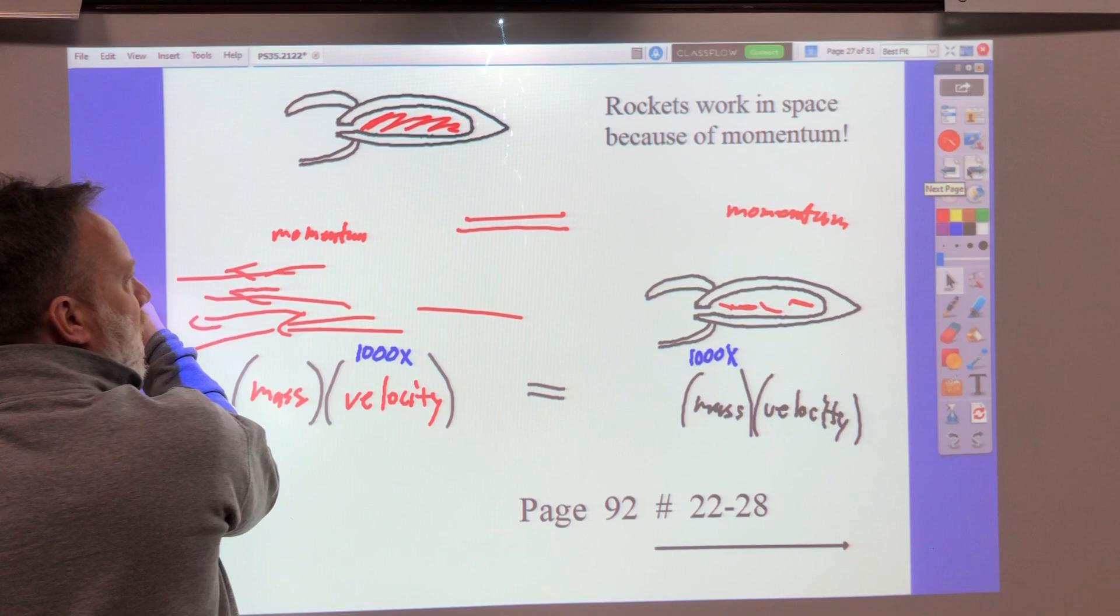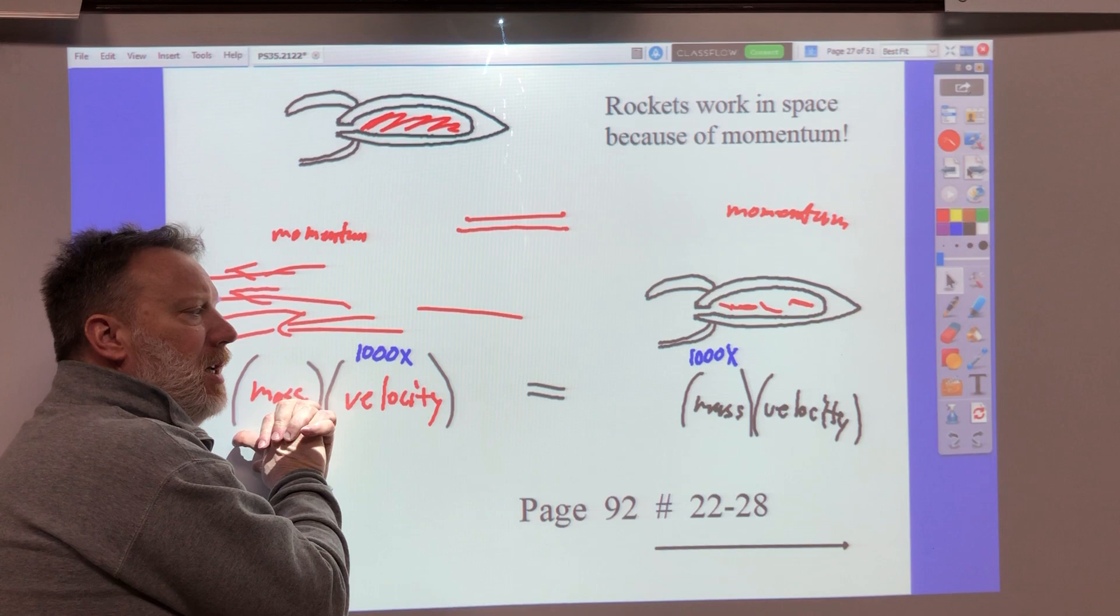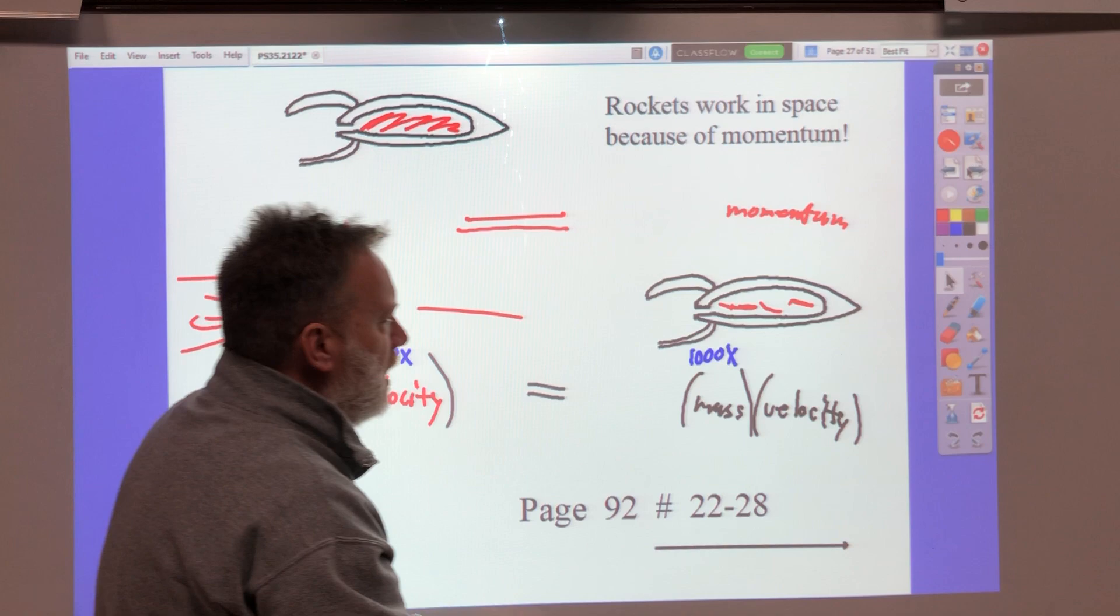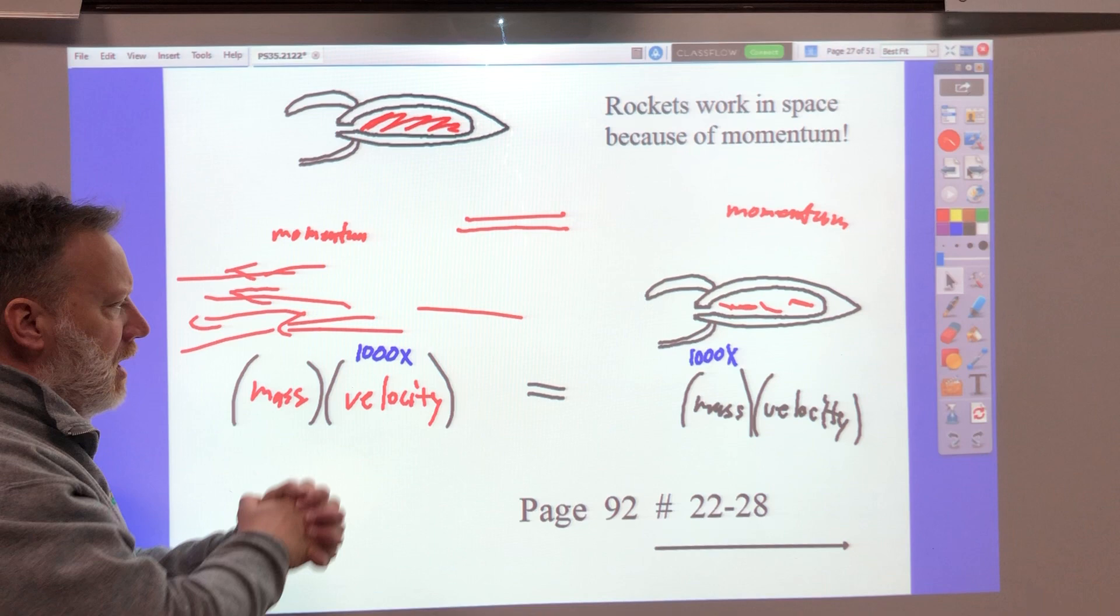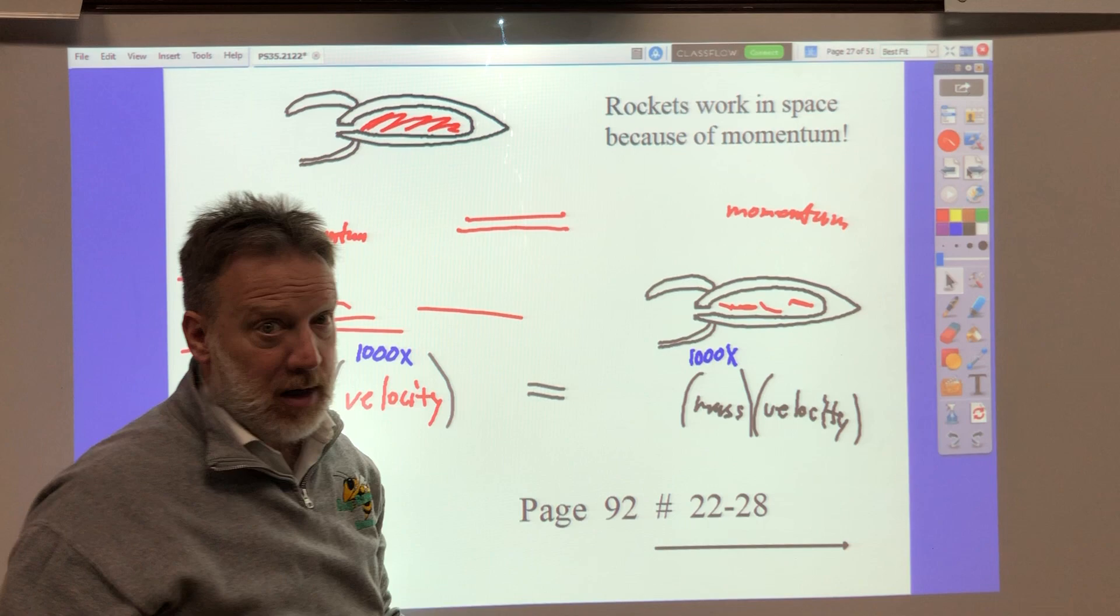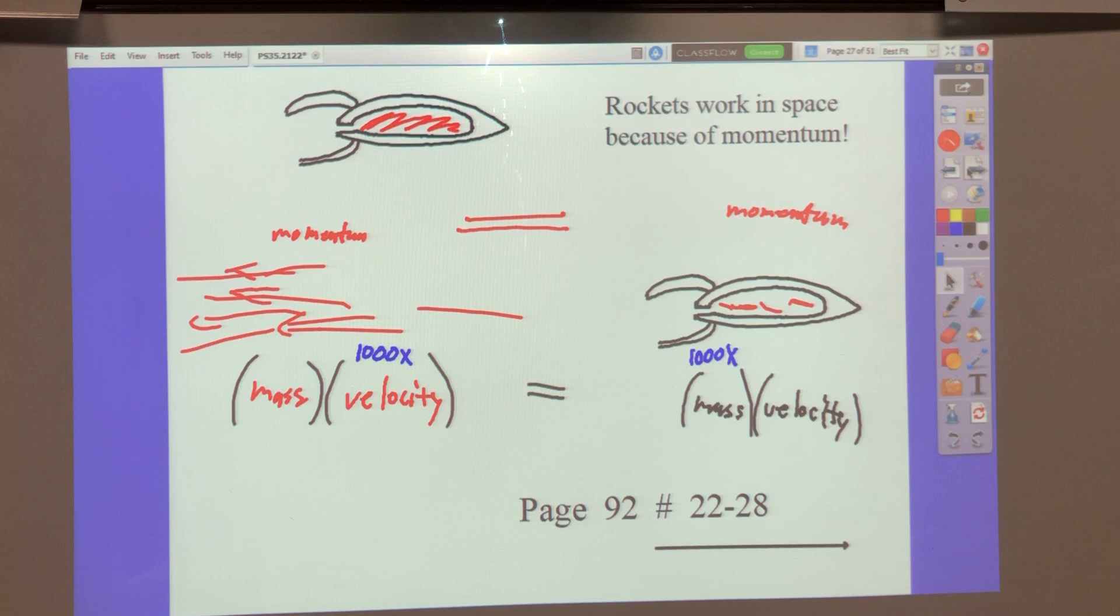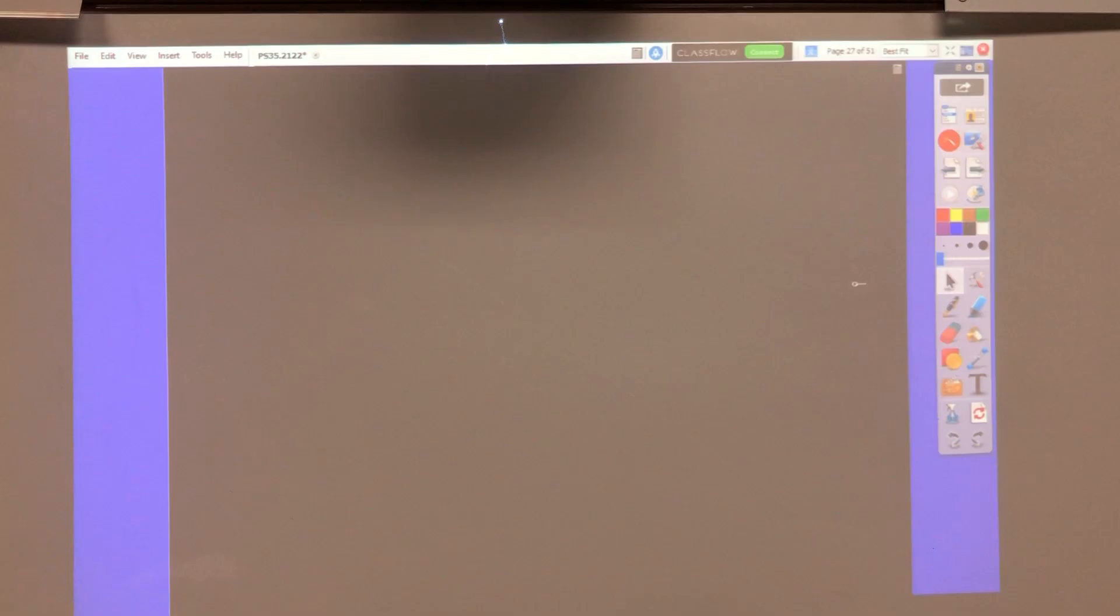So rockets work in space because of momentum. If we've got the rocket gases shooting out here real fast, it'll push the rocket that way. And our equation still works. Momentum is equal to momentum. Mass times velocity is equal to mass times velocity. Let's say the rocket is a thousand times heavier than these gases. Then these gases are going to shoot out of the rocket a thousand times faster than the rocket picks up speed. It takes a rocket a while to pick up speed. Okay, let's go on to the questions.